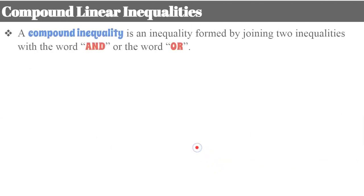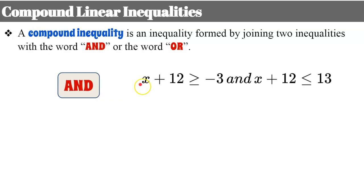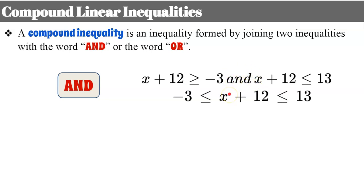Compound linear inequalities are inequalities formed by joining two inequalities, and they're either joined with the word AND or with the word OR. With AND, we have an inequality that could stand alone joined by AND and a second inequality. It could also be written in a combined fashion — for example, negative 3 less than or equal to x plus 12, and x plus 12 is less than or equal to 13. So there are two inequalities that can be split into two separate inequalities.